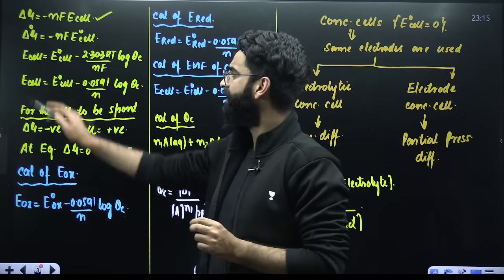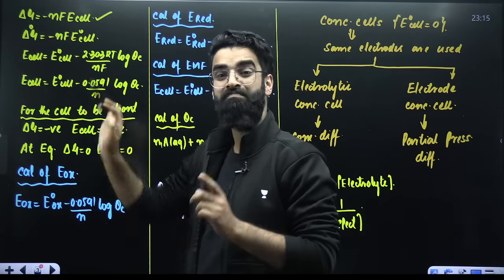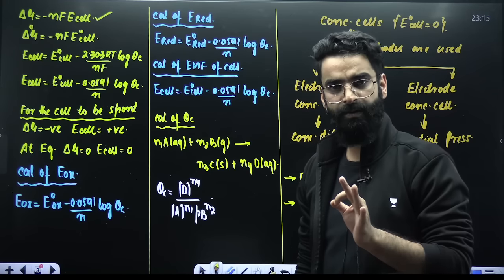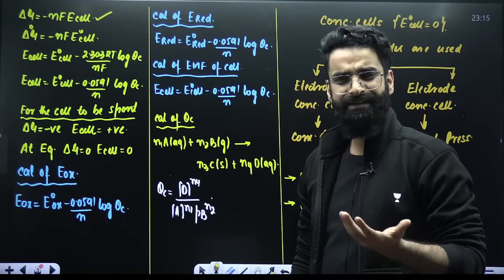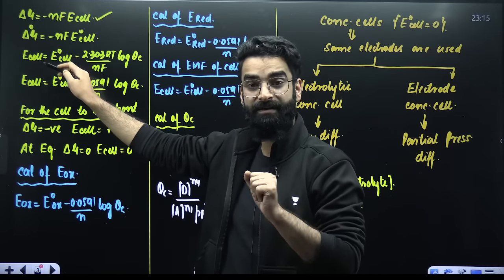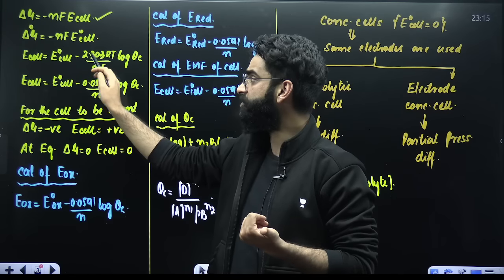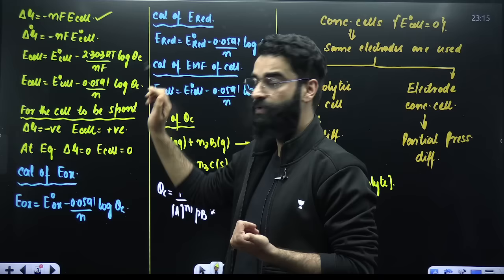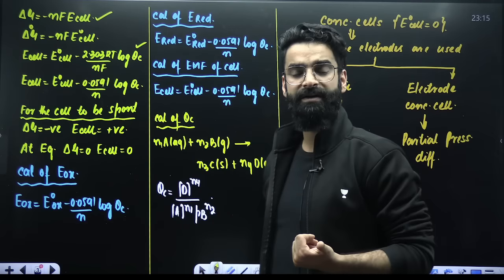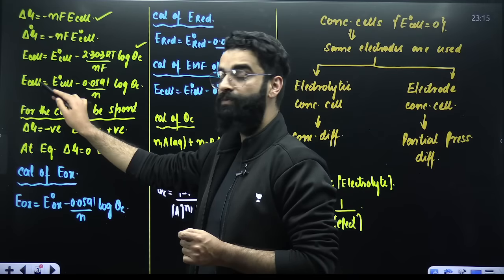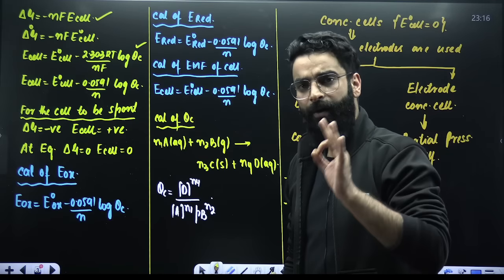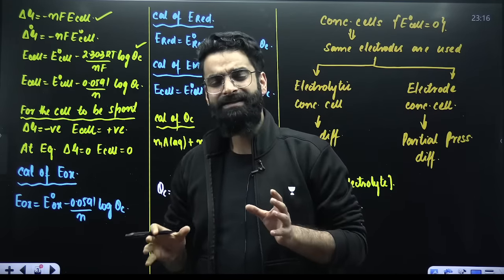The standard Gibbs free energy change for the cell is ΔG° = −nFE°cell. The Nernst equation gives the EMF under non-standard conditions: E_cell = E°cell − (2.303RT/nF) × log(Q_C), where Q_C is the reaction quotient. The modified form used in calculations is: E_cell = E°cell − (0.0591/n) × log(Q_C).